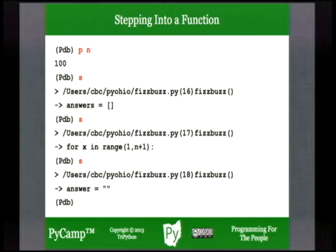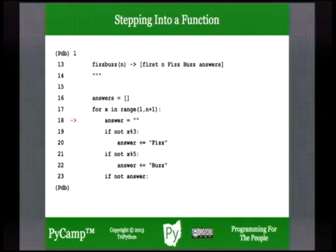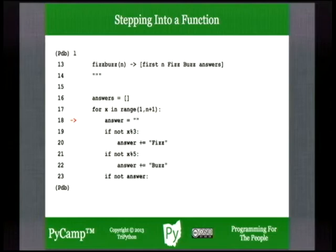Along the way we could be inspecting what is bound to 'answers' and what's bound to 'x' as we proceed around the for loop. You can also use 'l' at any time to see yourself running around the for loop. It's going to run around 100 times — you can step through as many of those as you'd like, but it could take a while. Sometimes you have to think about your debugging process: do I have all day? Is there any reason to suspect the first time would be different from the 80th or 90th time?